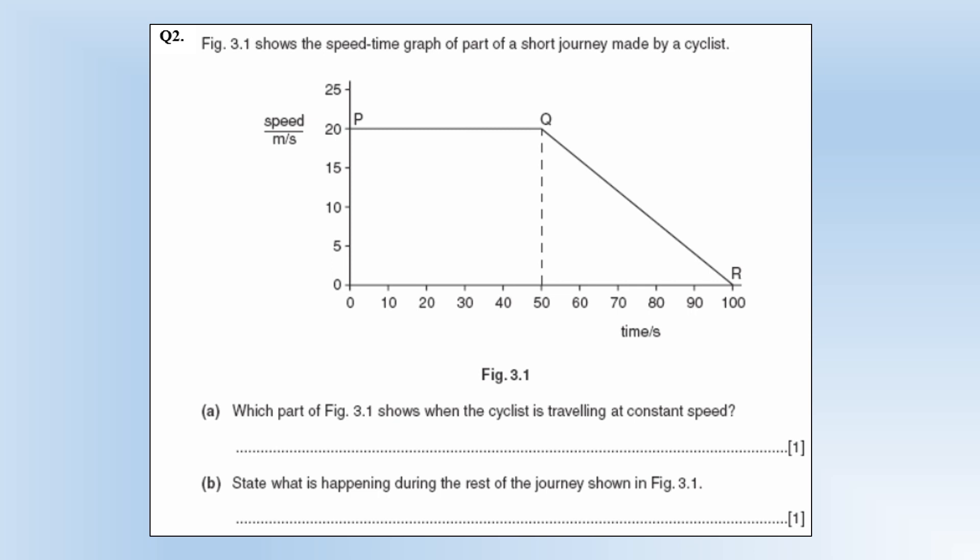Which part of the diagram shows when the cyclist traveling at constant speed? That's P to Q - they're traveling at 20 meters per second the whole time. State what is happening during the rest of the journey? It's constant deceleration there and we need both parts. It's a straight line so that tells us constant, and speed is decreasing which tells us deceleration.